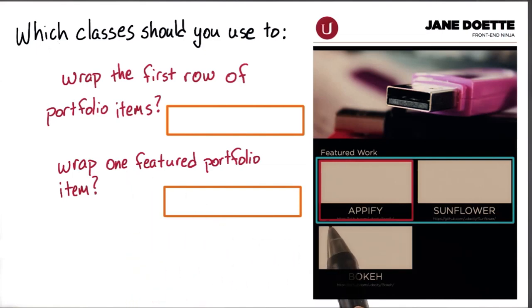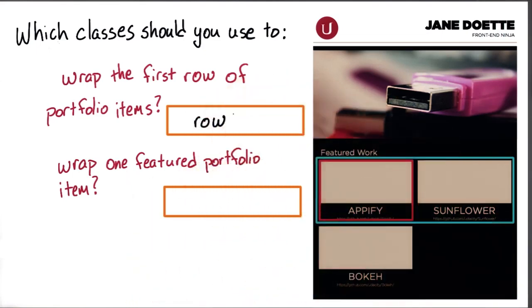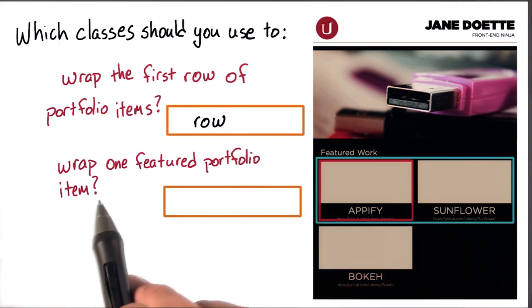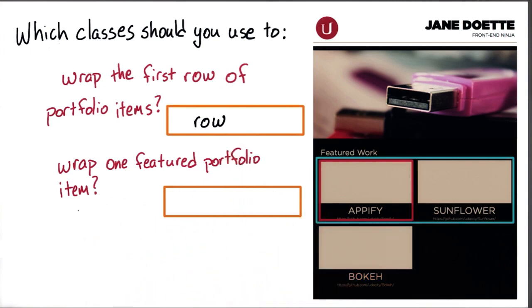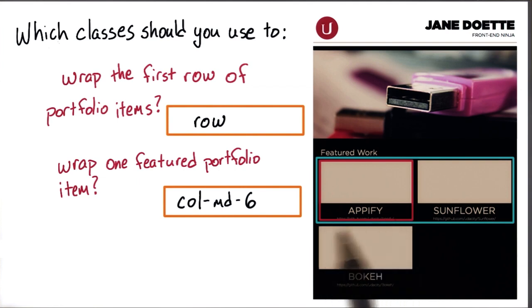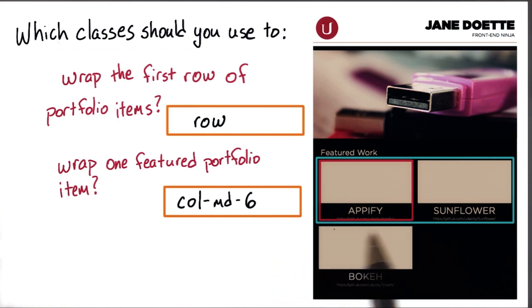Looking at the first one, to wrap this row of portfolio items, we'll use the class row. Now for the second, to just wrap one portfolio item, because it covers half of the screen, we'll use column medium six, where six is half of 12, and this featured work takes up half the screen.